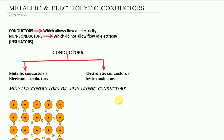In this video we will cover metallic conductors and electrolytic conductors. First, the basic definition: conductors are the ones that allow the flow of electricity and are good conductors of electricity, while non-conductors, also known as insulators, do not allow the flow of electricity and are bad conductors of electricity.